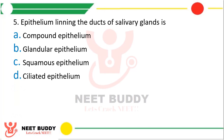Question five: Epithelium lining the ducts of salivary gland is — option A, compound epithelium; option B, glandular epithelium; option C, squamous epithelium; option D, ciliated epithelium. The correct answer is option A, that is compound epithelium.